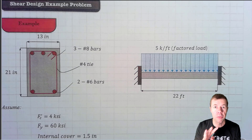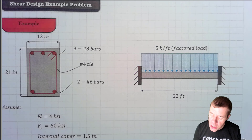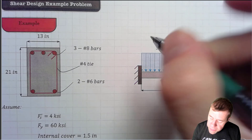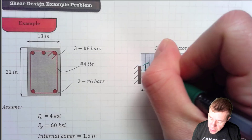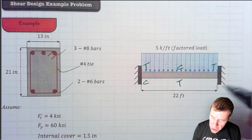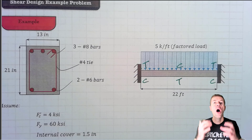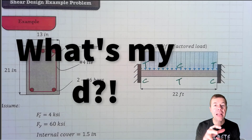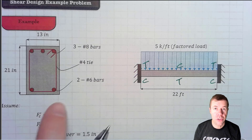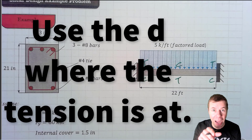The first question you have to start asking yourself on these problems is: where is my tension? You can imagine what the deflected shape is going to look like. We're going to have tension at the sides and compression in the middle. Now, why is that important? When it comes to shear, you have to think about what's my D — the distance from the compression fiber to the center of the tension steel. I have different size bars on the top and the bottom, so I have different D values depending on where the tension is.